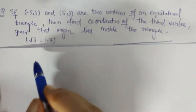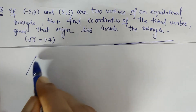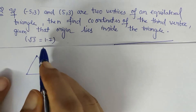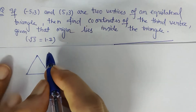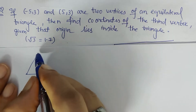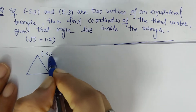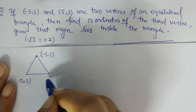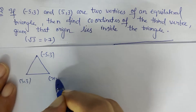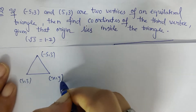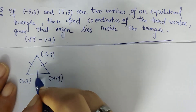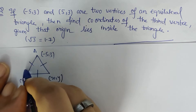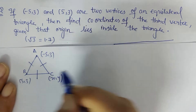Friends, look at the problem we have been given: an equilateral triangle where the three vertices are minus 5 comma 3, then 5 comma 3, and the third vertex is not known — let us take it as x comma y. As we know it is an equilateral triangle, all three sides are equal, so let us equate all three sides.